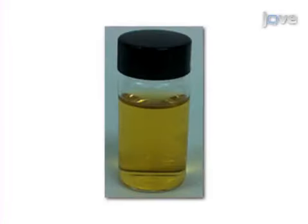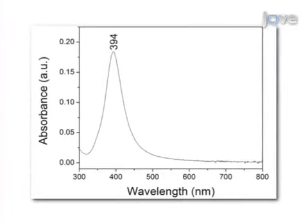First, synthesize 4 liters of Crichton colloidal silver nanoparticles. Verify the quality of the colloid by determining the surface plasmon resonance using UV-Vis absorption spectrophotometry.